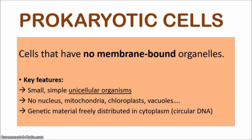Key features to note about prokaryotic cells: they're usually very, very small — simple in structure — and they make up unicellular organisms, meaning that one single cell is the whole organism. The absence of membrane-bound organelles means no nucleus, no mitochondria, no chloroplasts, no vacuoles, no endoplasmic reticulum, no Golgi apparatus, and so on. All of these organelles with membranes are not present in prokaryotic cells.